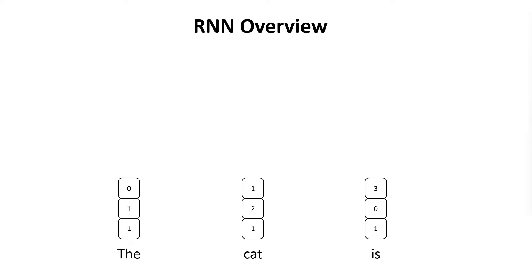This is a brief introduction of recurrent neural networks for those of you that are not familiar with this type of concept. Long Short-Term Memory cells are a derivation of this type of neural network with some improvements on it. Regular recurrent neural networks are a special type of neural nets that work on sequences of vectors.